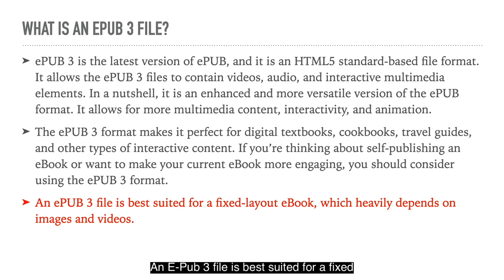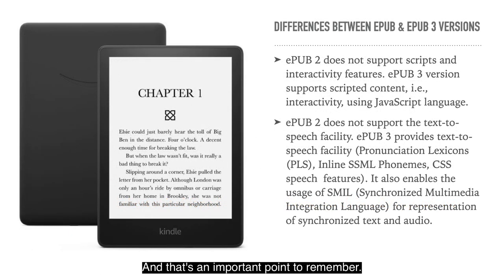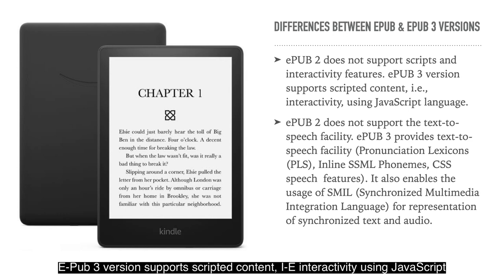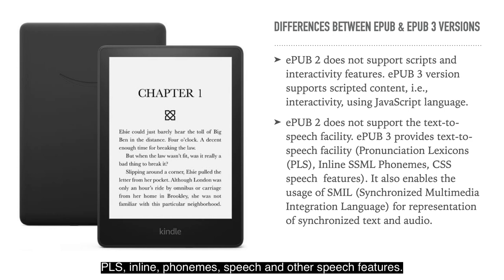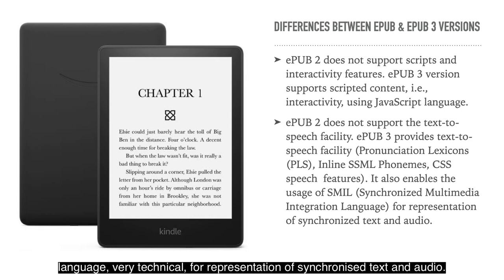An EPUB3 file is best suited for a fixed layout book that heavily depends on images and videos — that's an important point to remember. EPUB2 does not support scripts and interactivity features, whereas EPUB3 supports scripted content — i.e., interactivity using JavaScript. EPUB2 does not support text-to-speech, while EPUB3 provides text-to-speech facilities, pronunciation, lexicons, inline phonemes, speech, and other speech features. It also enables use of SMIL (Synchronized Multimedia Integration Language) for representation of synchronized text and audio.